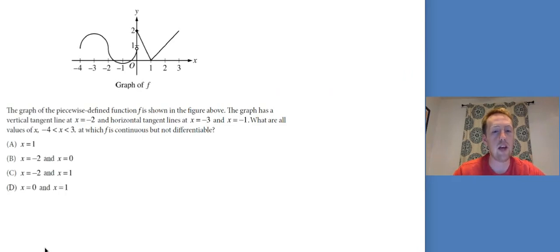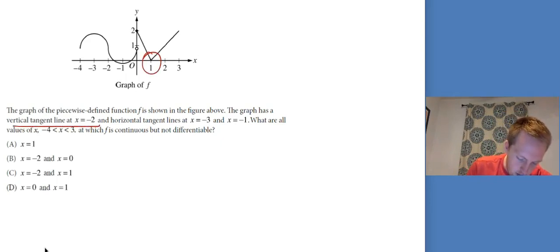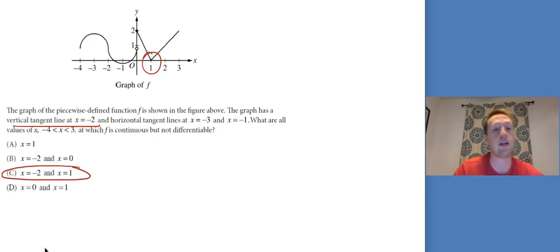The graph of piecewise defined function f has a vertical tangent at x equals negative 2 and horizontal tangent lines at x equals 3 and x equals negative 1. What are all values of x at which f is continuous but not differentiable? We need continuous, so x equals 0 is out. We're looking for places where it's continuous but also has a corner, cusp, or vertical tangent line. At x equals negative 2, we've got a vertical tangent, and we see a corner at x equals 1. So it's continuous but not differentiable at x equals negative 2 and x equals 1.